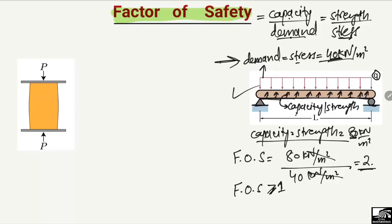Now let's discuss the same concept for a column. Consider a rectangular column with a compressive load of 400 kilonewtons acting on it. The resistance provided by this column to that load is let's suppose 1200 kilonewtons.